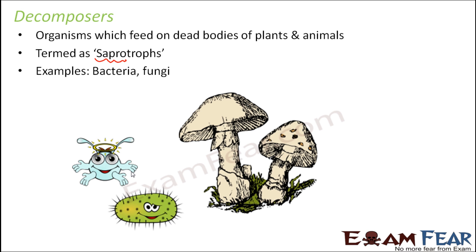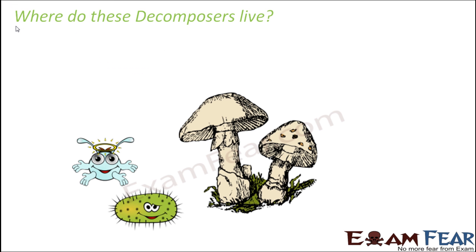These decomposers — mostly bacteria and fungi — help us to keep the forest clean. They mostly live in the soil, which is why the process of decomposition takes place in the soil. Whenever an organism dies, it remains on the ground. Gradually, that dead organism may be eaten by some other animal, and then the remaining matter stays on the ground. The bacteria or decomposers present in the soil then start doing their job, and that is how decomposition takes place in the soil, cleaning up the dead body.